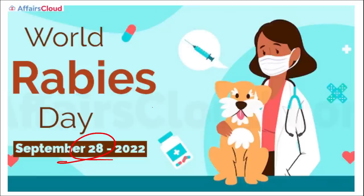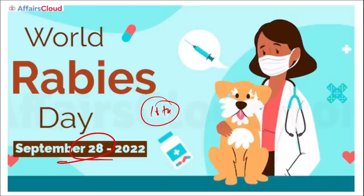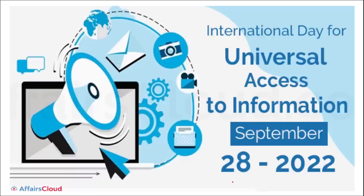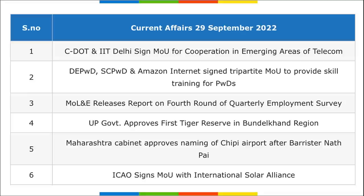World Rabies Day was observed on 28th September — this was the 16th edition — with the theme 'One Health, Zero Deaths.' Rabies is caused by a dog bite. The International Day for Universal Access to Information is also observed on 28th September; the theme this year was 'Artificial Intelligence, E-Governance, and Access to Information.' This day is celebrated in Uzbekistan on 28th and 29th September.